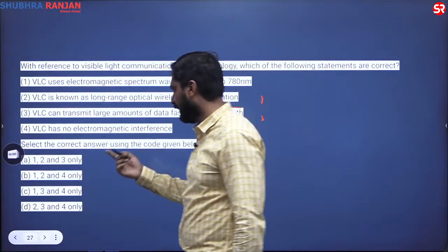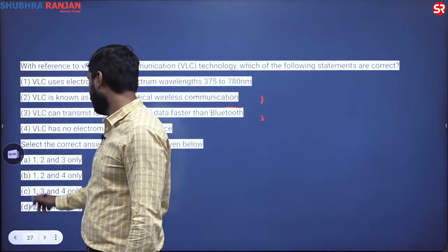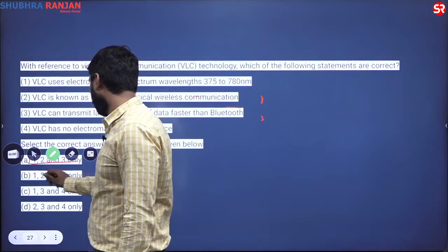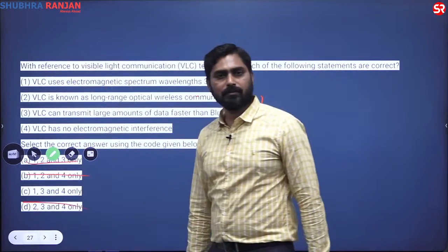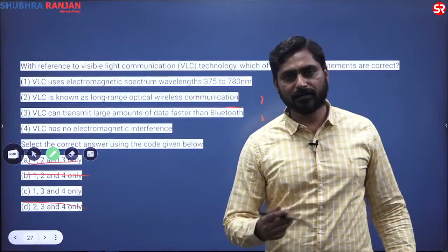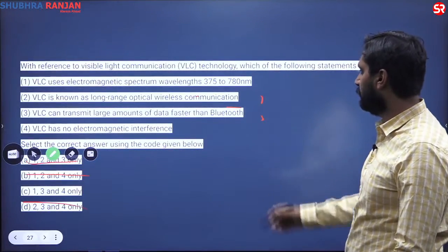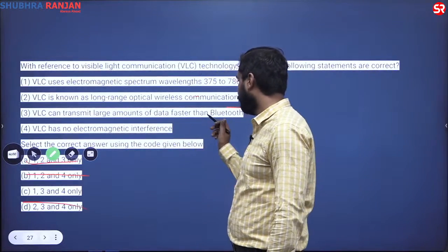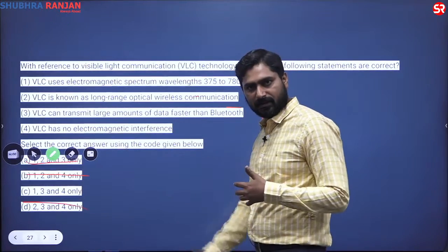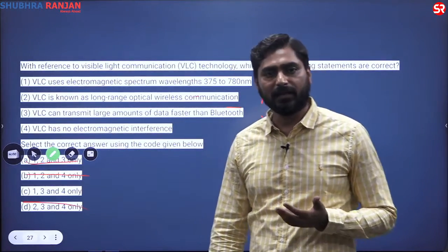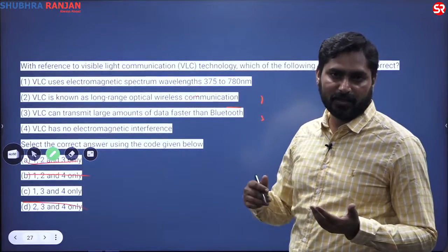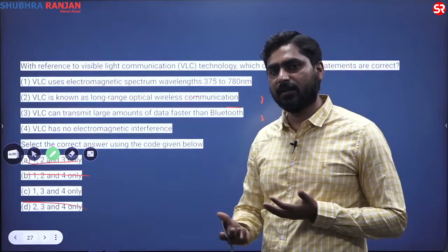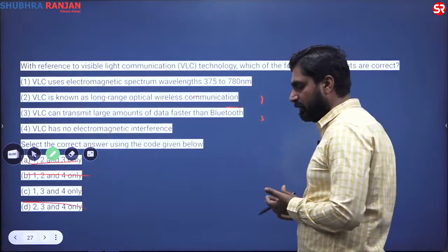If the second statement is wrong, you can reach the answer: C, meaning statements 1, 3, and 4 are correct. Statement three: 'VLC can transmit large amounts of data faster than Bluetooth' — yes, this is an advantage of using light as a medium. Why faster? Because light itself is faster than radio frequency, so data transport is also faster.